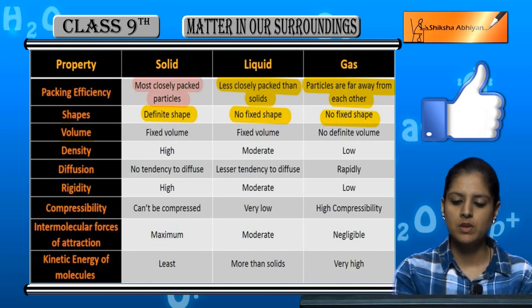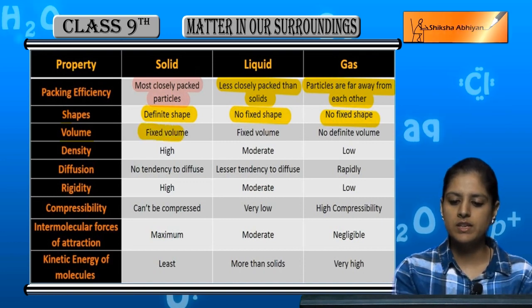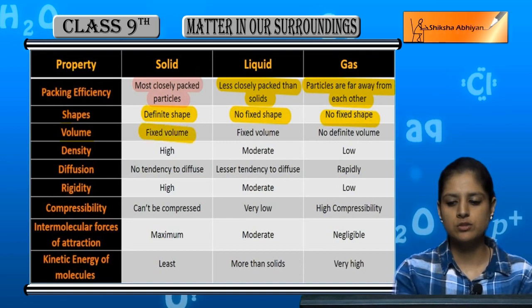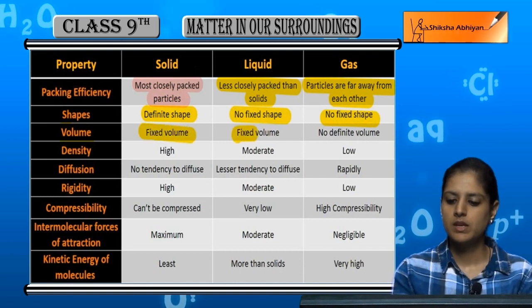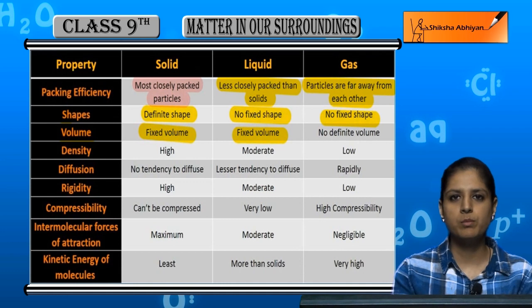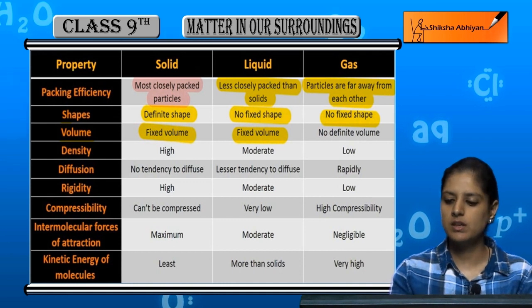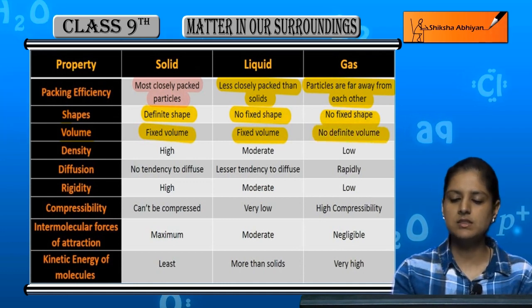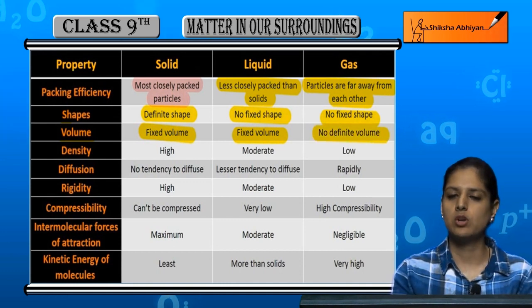Volume: solids have a fixed volume. Liquids have a fixed volume but no fixed shape. Gases have no fixed shape and no fixed volume.